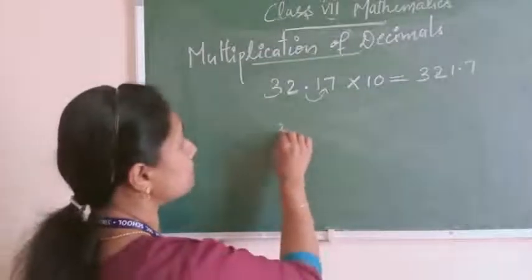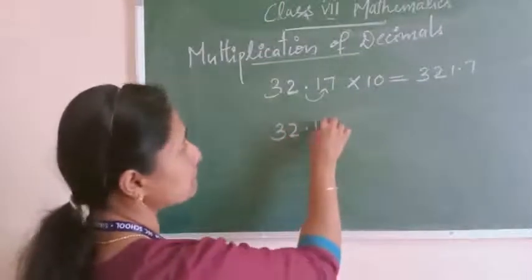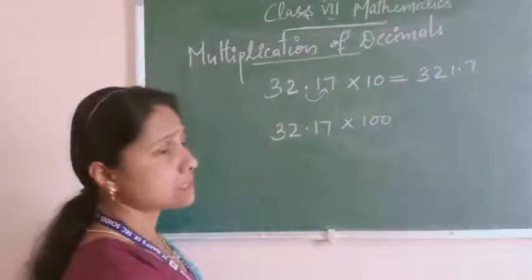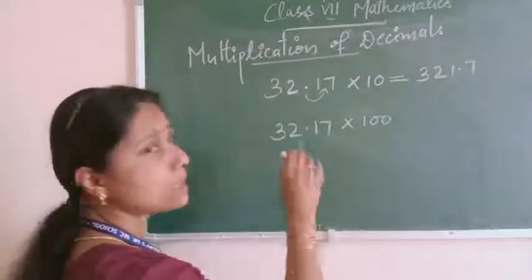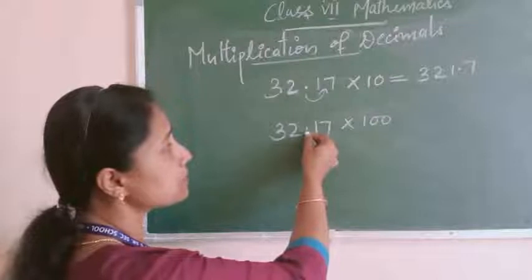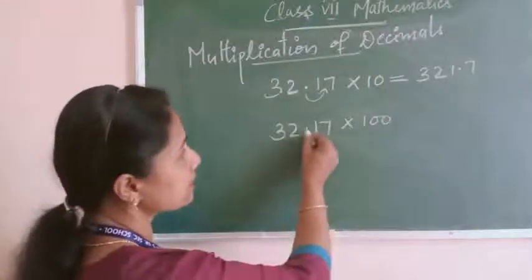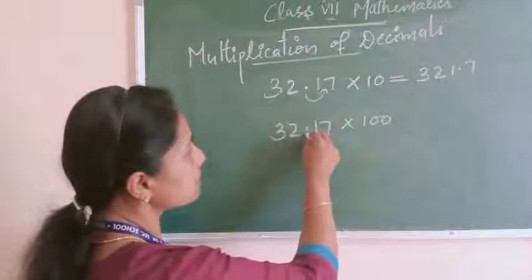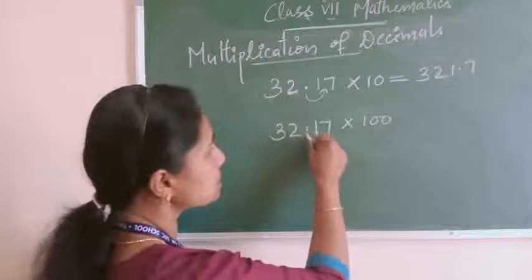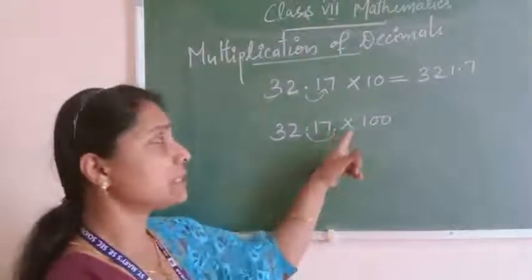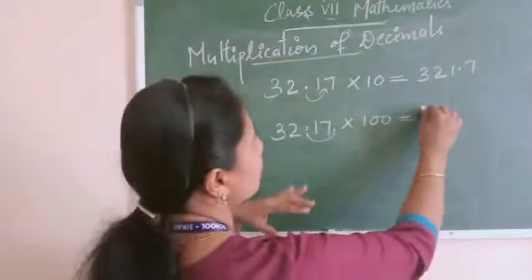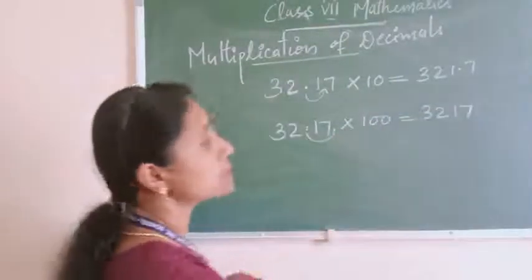See one more example. If it is 32.17 multiplied by 100, for multiplication by 100 you have to shift the decimal point to the right by two places. This point is here — from this position, you shift after two digits: one and two. So the point will come after the 7. Since there is no digit after the point, your answer is 3217.